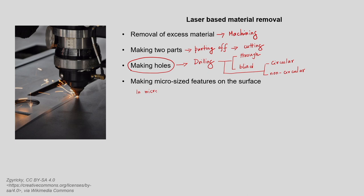Further, in micro manufacturing or generation of micro parts, it is required to generate micro-size features on the surface. It may be dimples of various shapes such as circular or diamond dimples, or we may have some slots on the surface, or we may have some pockets on the surface — all in micro size.